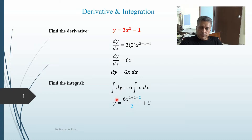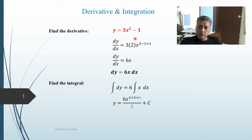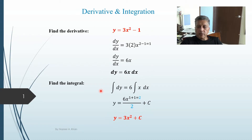When we integrate, dy becomes just y. In differentiation we reduced the power, so in integration we increase the power by one and then divide by that new power. We also have to add back the constant that disappeared, which comes in the form of c. If we had values for x and y we could solve for c — it would become minus 1. Cleaning this up: 2 goes into 6 three times, giving us 3x squared plus c. So that is the review of taking a derivative and integrating it — they are inverse functions of each other.